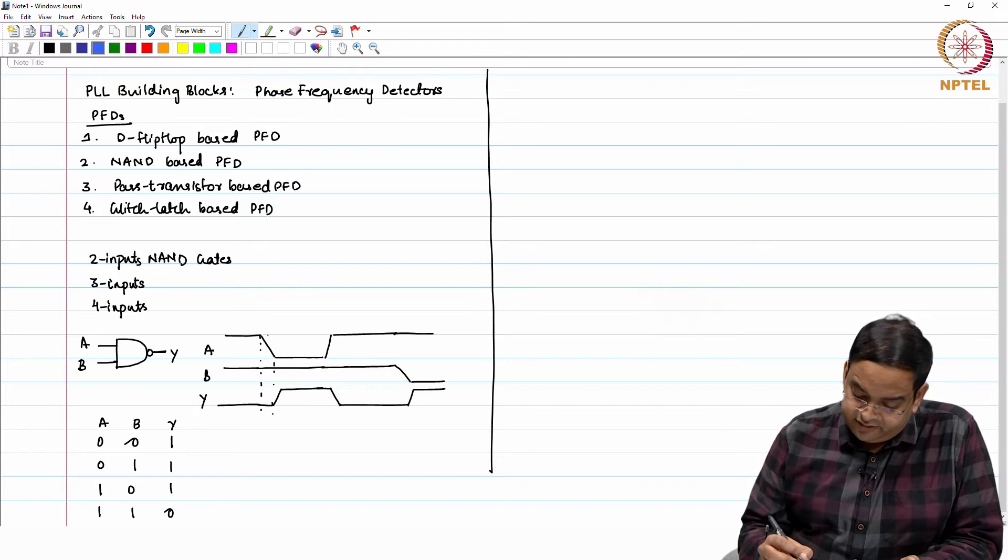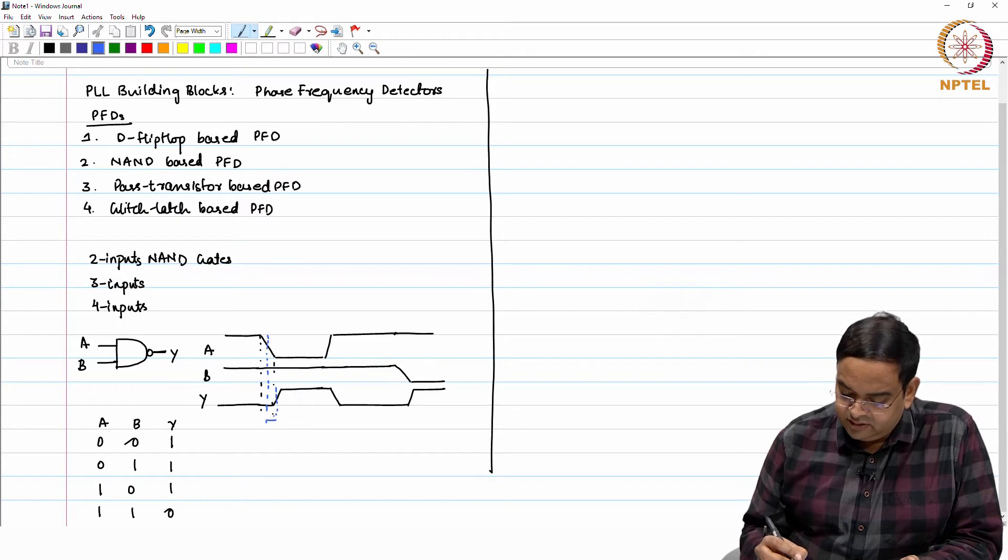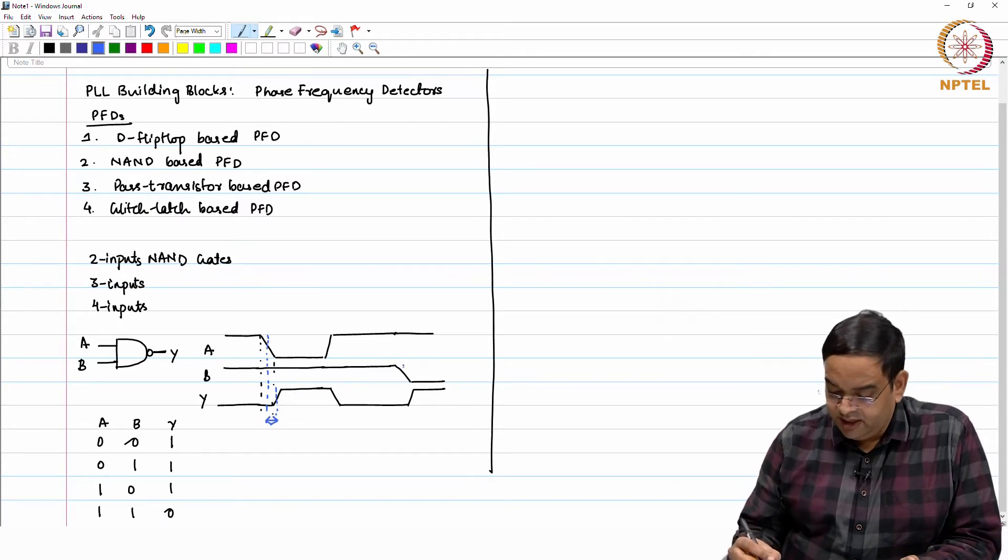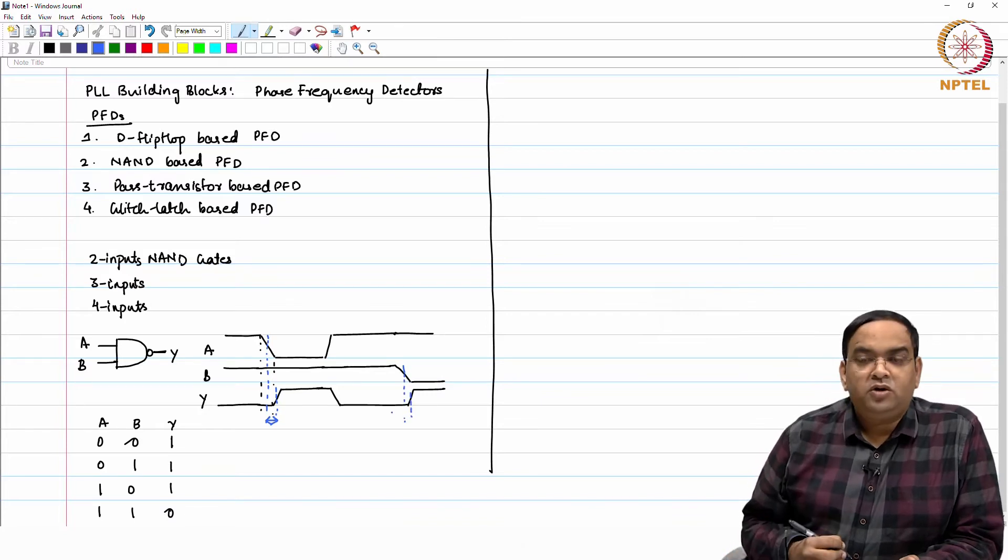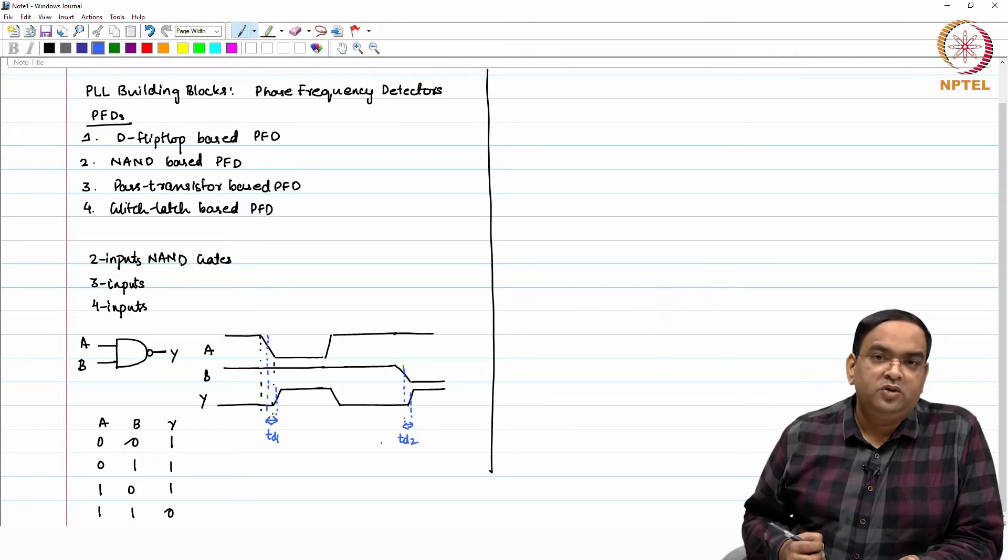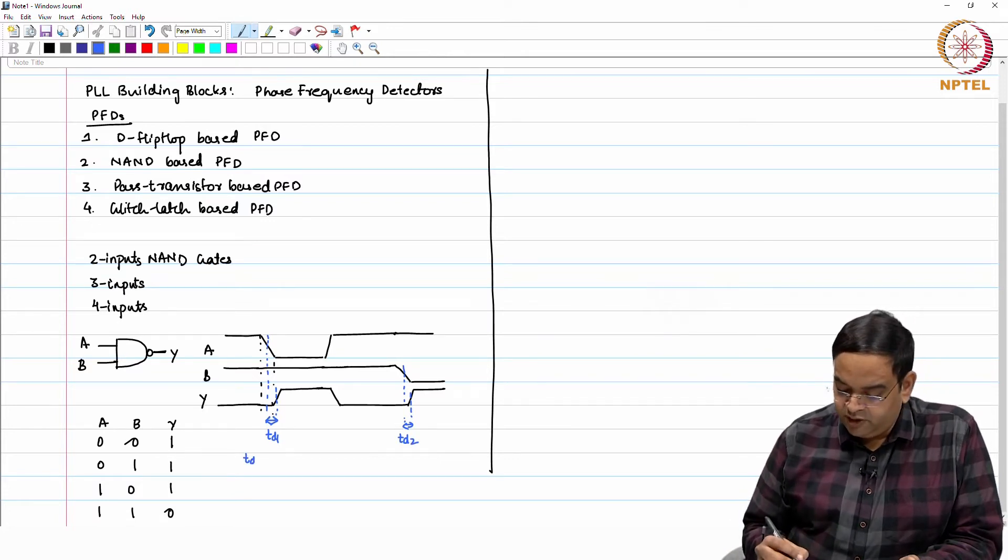In this case, if you look at it, the delay between the transitions - the time between A and Y and the transition between B and Y - these two transition delays should be same ideally. Td1 should be equal to Td2.